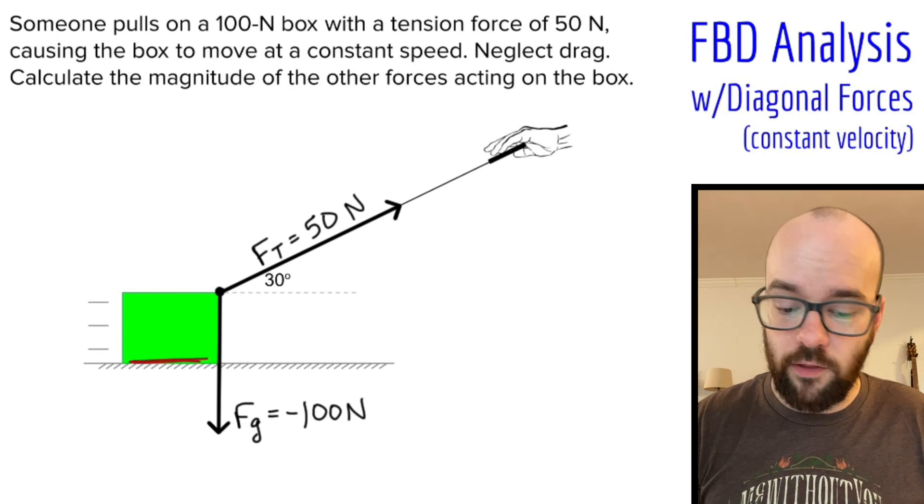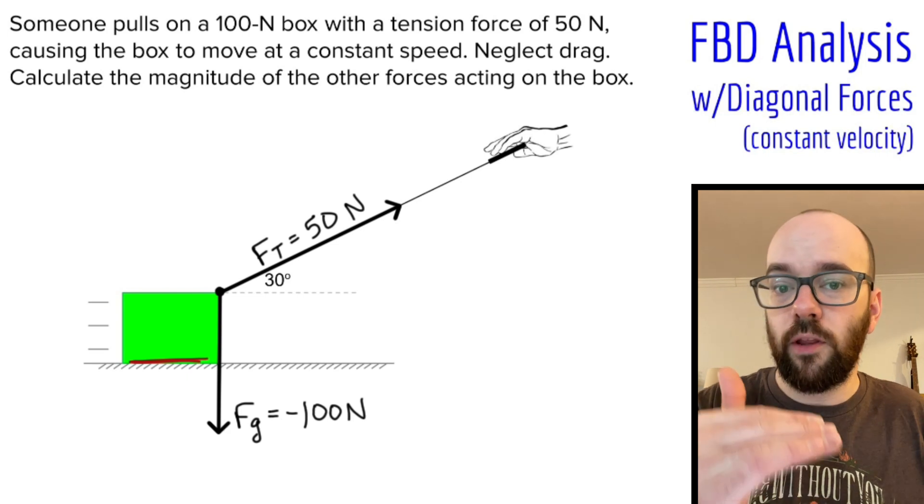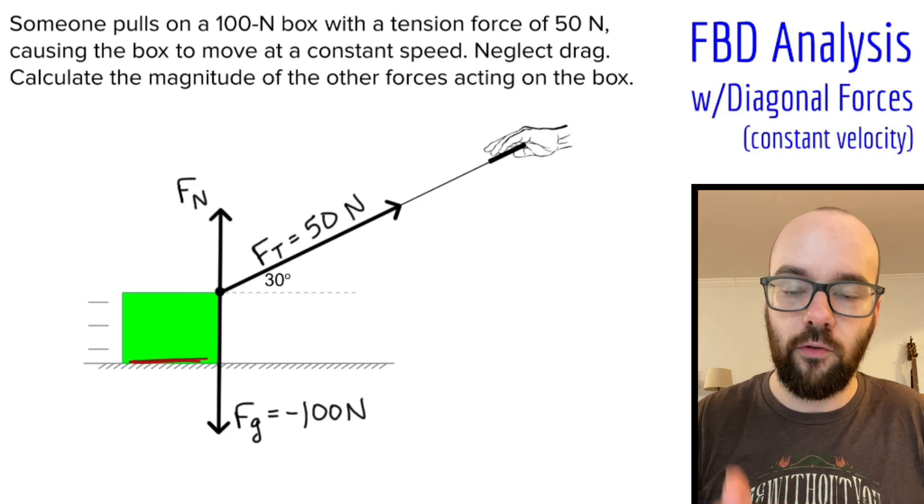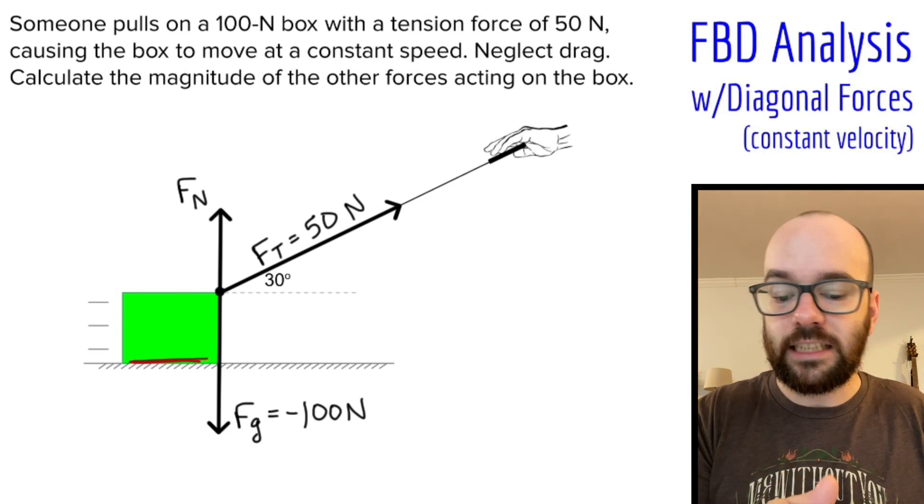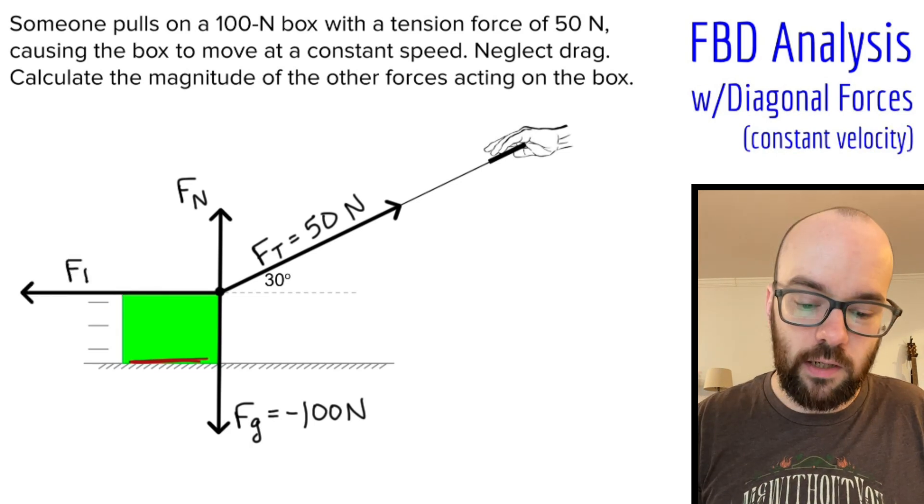That box is in contact with the ground, and the ground is going to be holding the box upward, so I've got a normal force pointed upward. That box is also sliding along the ground, so there's going to be a resistive friction force. Since the box is moving to the right, friction must be to the left.